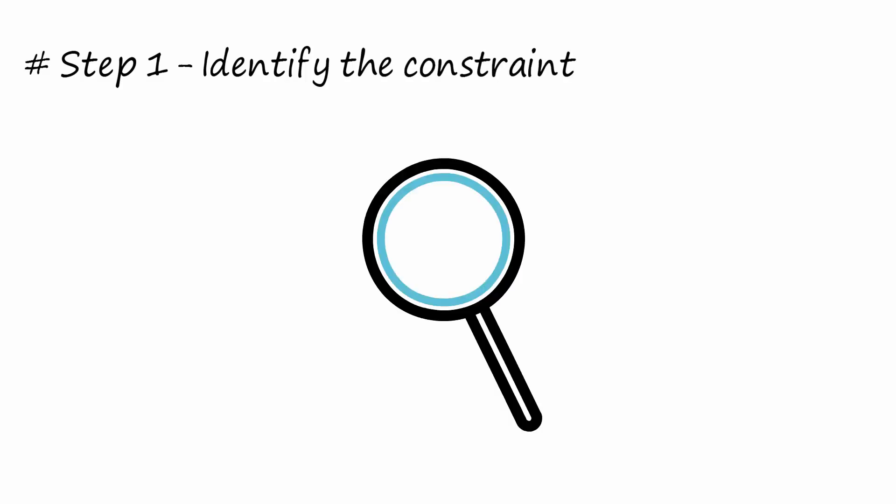The cycle of constraints theory is based on five steps. Step 1: Identify the constraint. Step 2: Exploit the constraint.